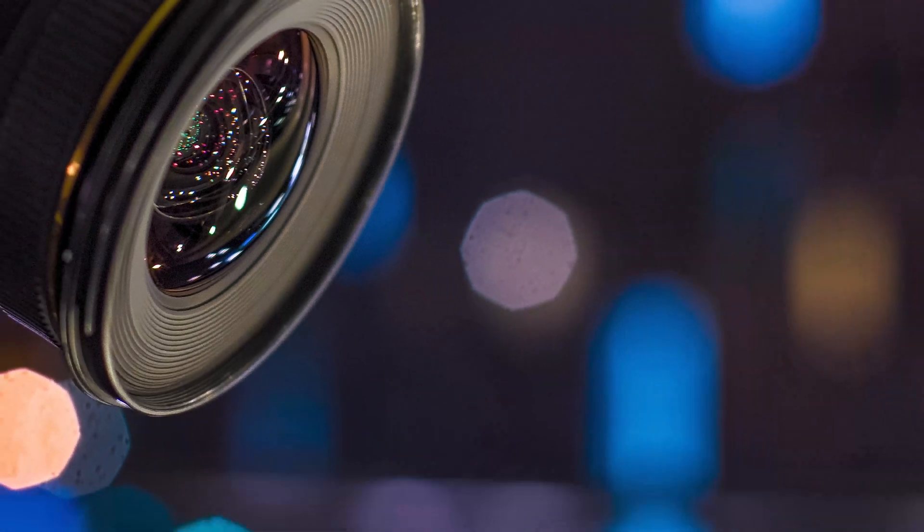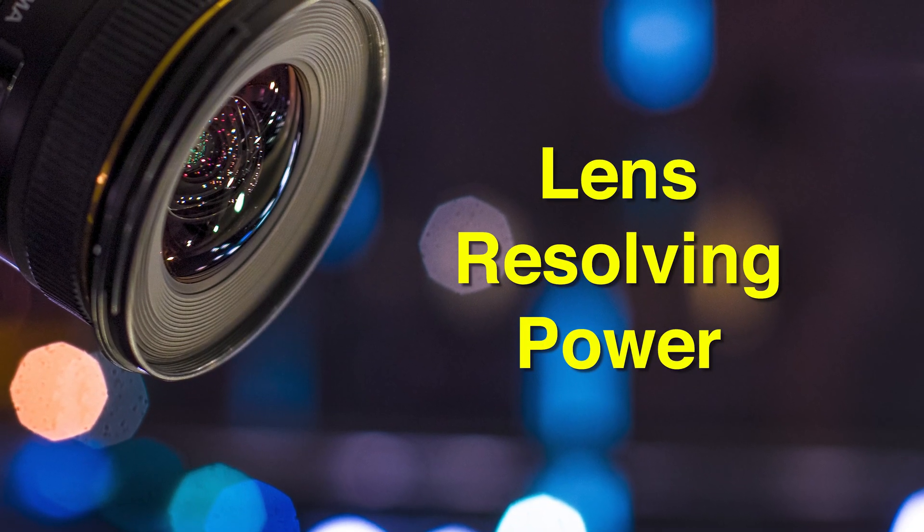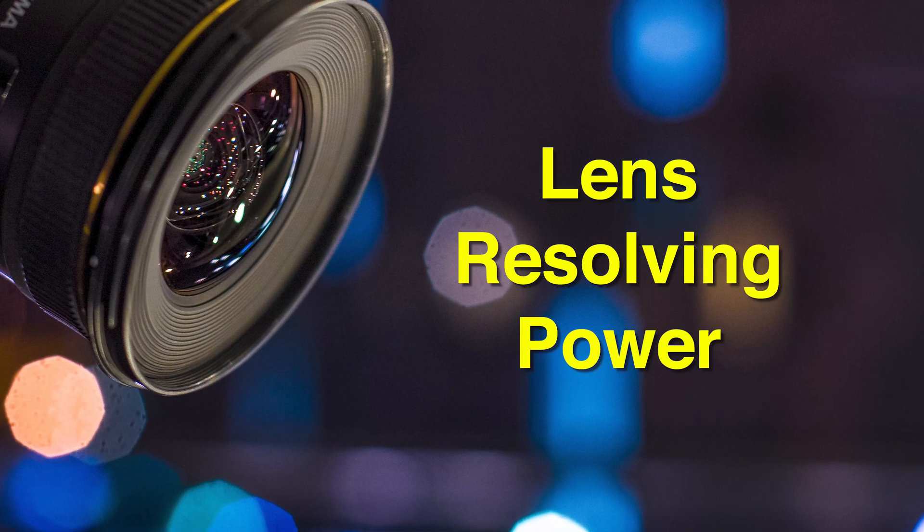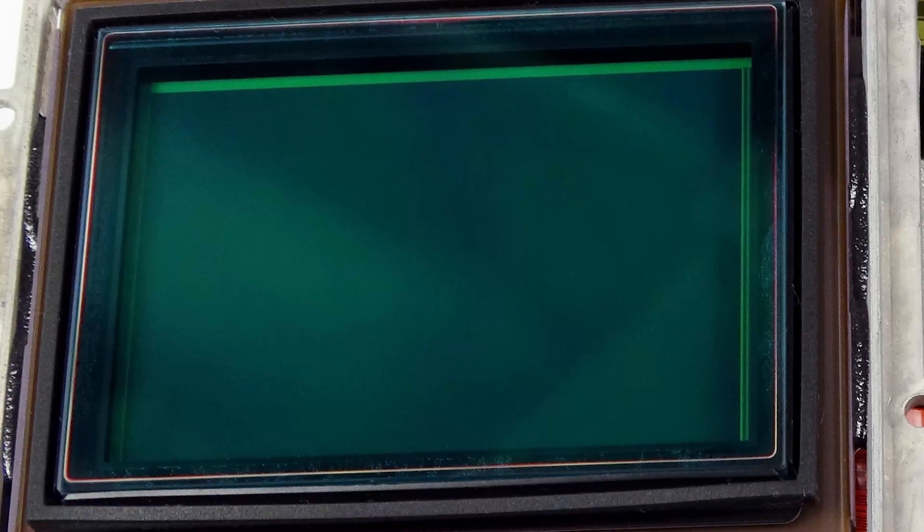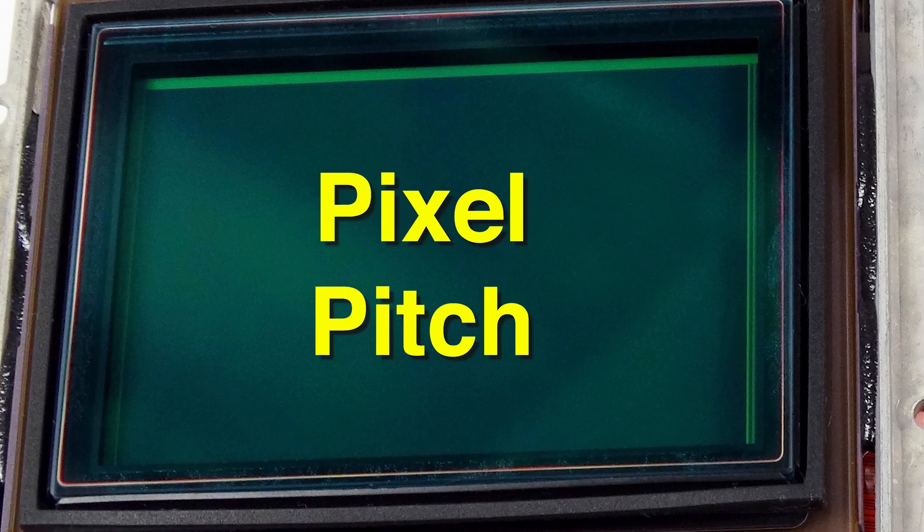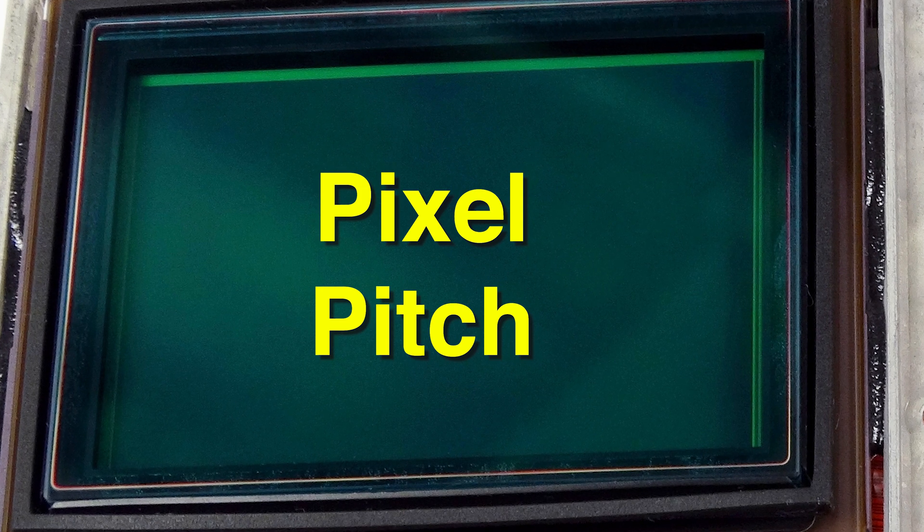Third thing I want to talk about is lens resolving power and how the sharpness of your lens can also determine problems with softness, and then we're going to talk about the pixel pitch, which is the distance between photosites on the sensor and how this comes into play.